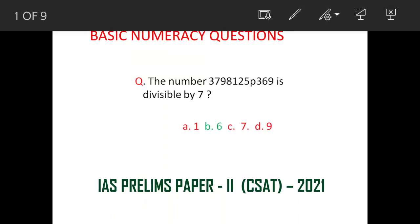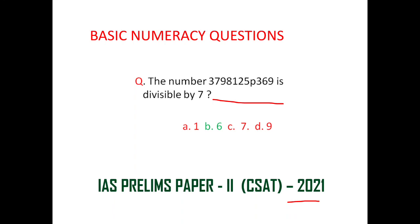Today we will see a question which was asked in IAS Prelims Paper 2 CSET 2021. The question is related to a missing number in a digit.